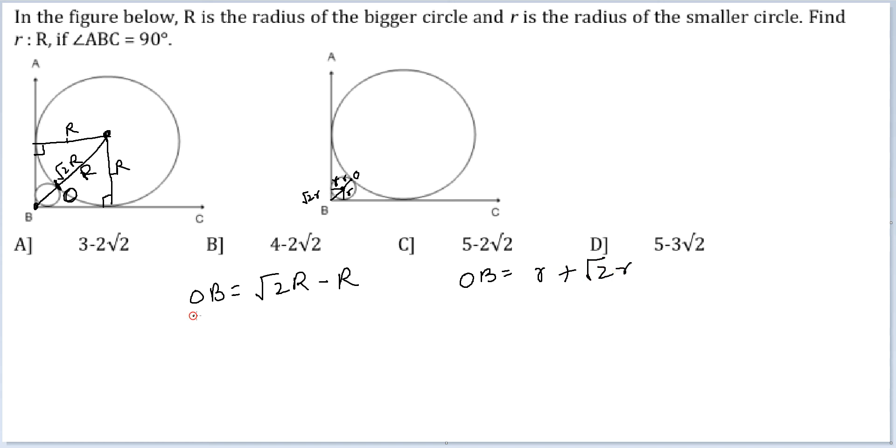I have one expression in terms of capital R, the same thing in small r. Let's equate them. I get r times root 2 plus 1 equals capital R times root 2 minus 1. Or I will get r by R equals root 2 minus 1 over root 2 plus 1. We can reach this ratio.